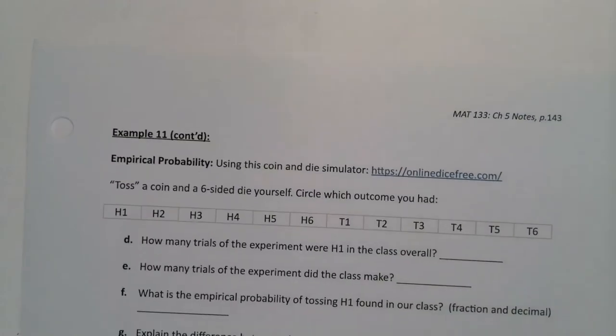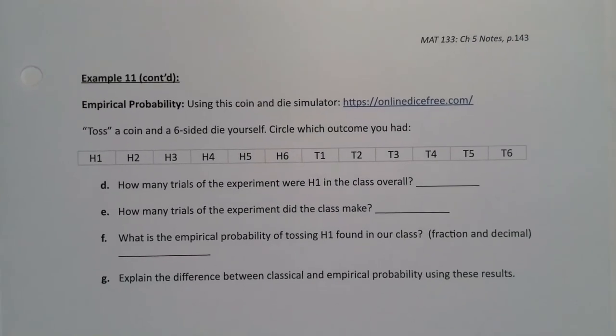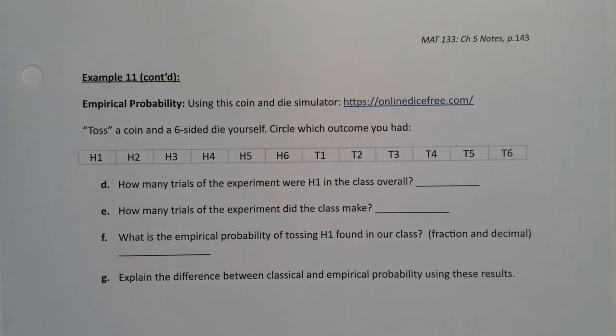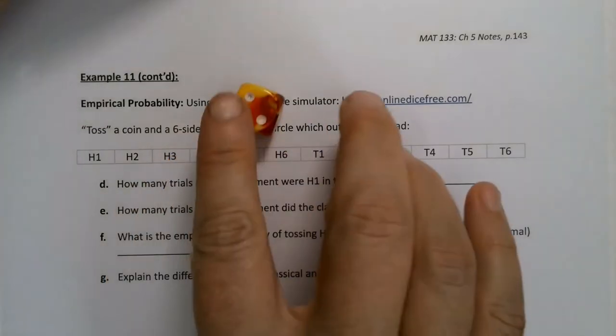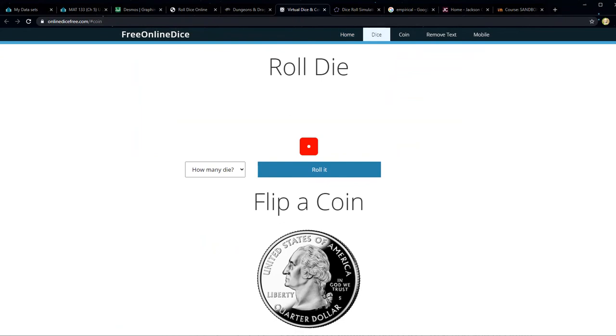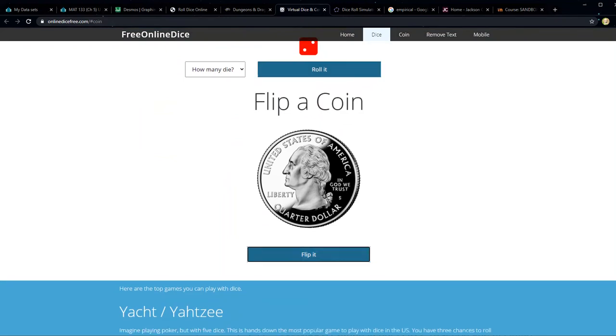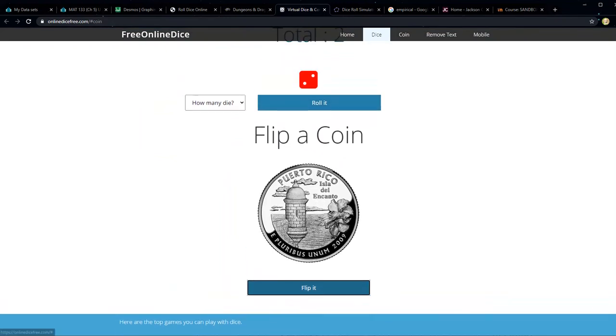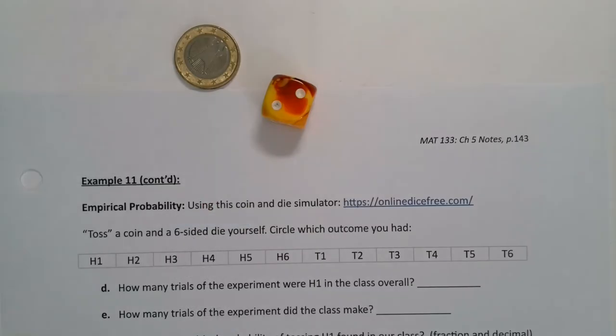Okay, but now we're going to use empirical probability. Now, if you're watching at home, you can use a simulator or you can use your own die and coin. Right? So you can toss—I tossed it right off the screen. I have a tails and a 2. You can see it right there. But you can also use an online dice simulator. So let me go grab that. It's right here. So it's onlinefreedice.com. So I can click roll on the die and flip the coin.